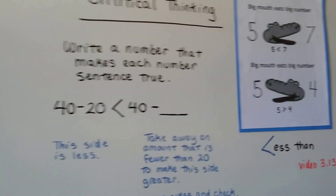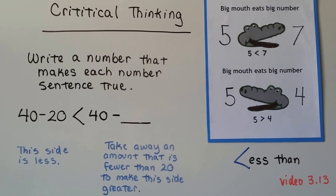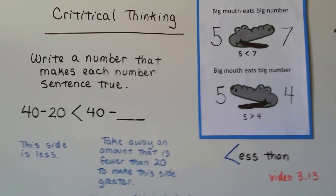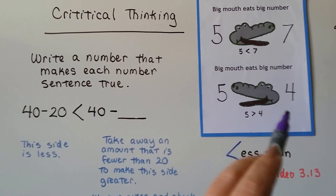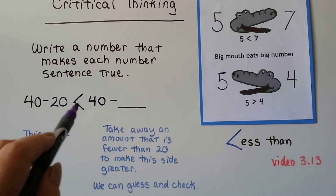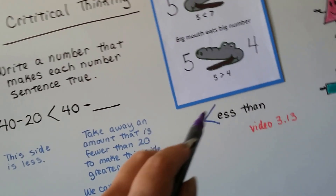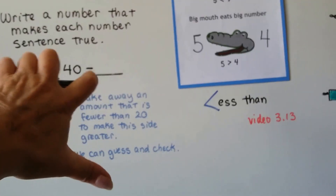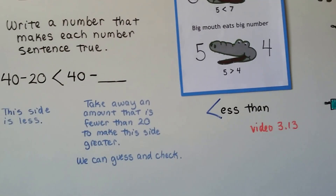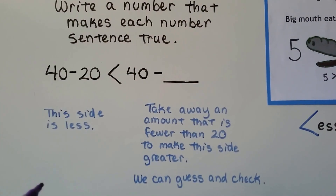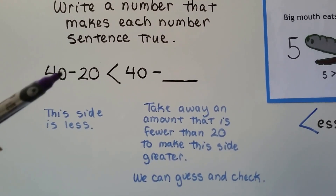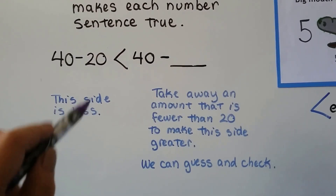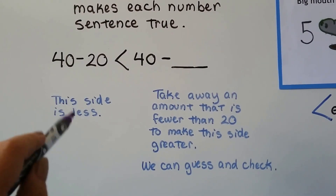Let's try some critical thinking. Do you remember back in chapter three we talked about less than, greater than, and equal to? We talked about that in video 3.13 — there will be a link in the description. Do you remember that the big mouth eats the big number? And the less than sign kind of makes the shape of an L. So it says: write a number that makes each number sentence true. 40 minus 20 is less than 40 minus something. This side needs to be less, and this side needs to be greater.